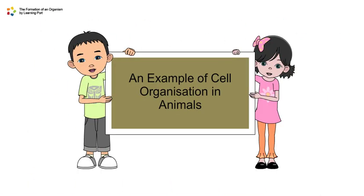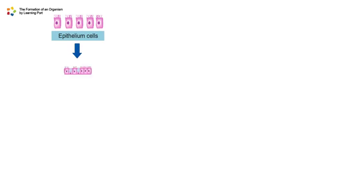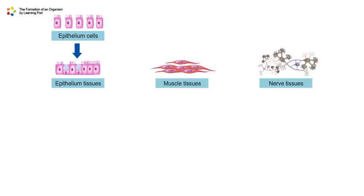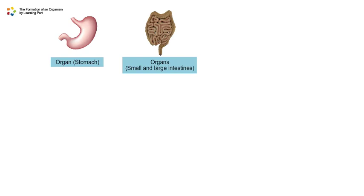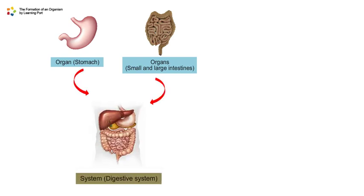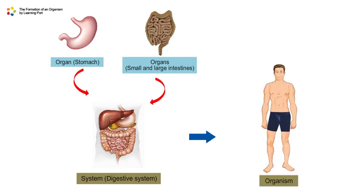Let's look at an example of cell organization in animals. A group of epithelium cells combine to form epithelium tissues. A group of different tissues that work together to perform a specific function form an organ. A group of different organs that work together to perform a specific function form a system. All systems work together to make up an organism.